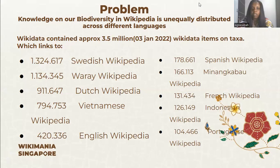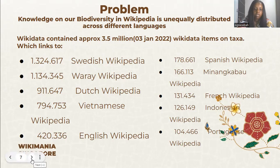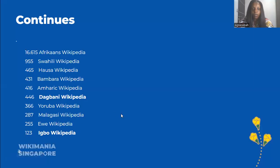Wikidata contains approximately 3.5 million taxon items as of January 2022. Looking at Wikipedia language editions, we have the Swedish Wikipedia, the Dutch Wikipedia at number 11, the English Wikipedia with more than 26,000 biodiversity articles, the Spanish, French, and Indonesian Wikipedias. Coming down to African language Wikipedias, there are far fewer representations in African languages compared to other continents.